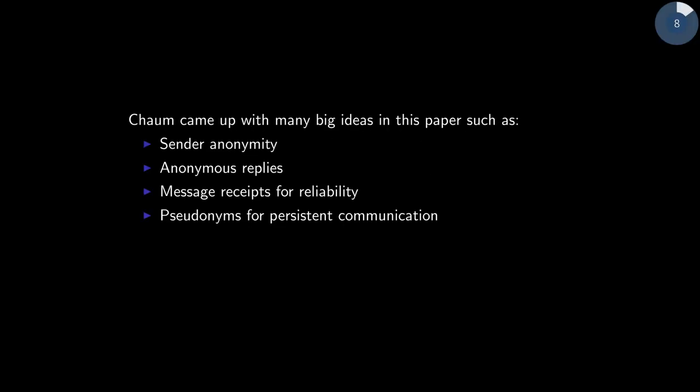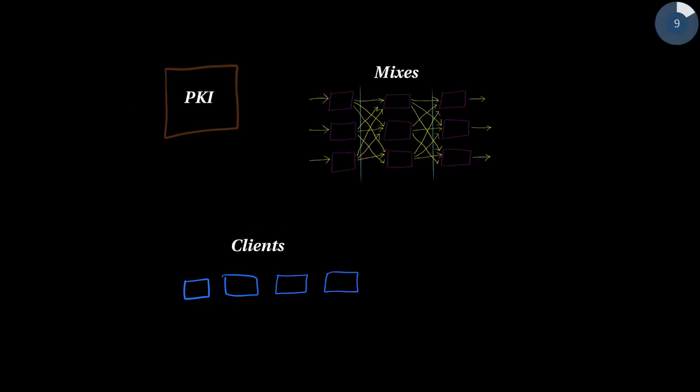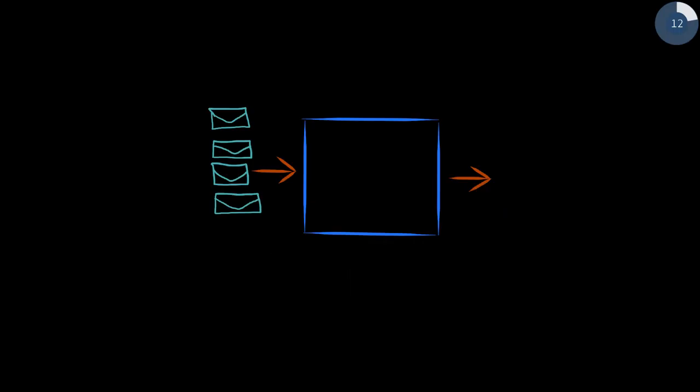David Chum came up with mixed networks in 1981. His paper here has all the big ideas in it: sender anonymity, anonymous replies, receipts, pseudonyms. So here's a basic mixnet diagram, architecture diagram. The way it works is clients retrieve a view of the network from some kind of PKI system. Then they can send messages into the mixnetwork once they know the information, which surely includes connectivity information like IP addresses and TCP port numbers, but also cryptographic key material.